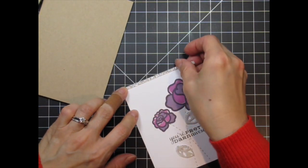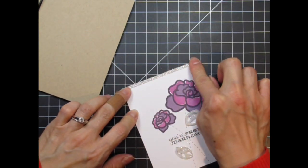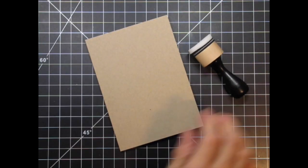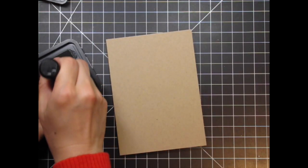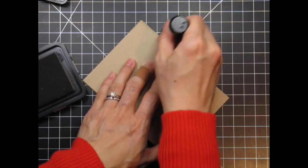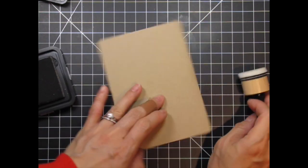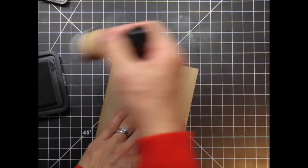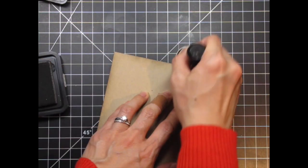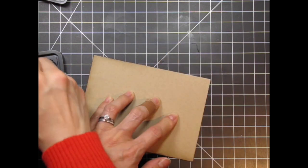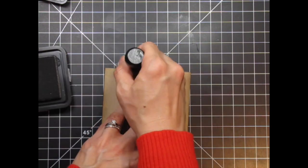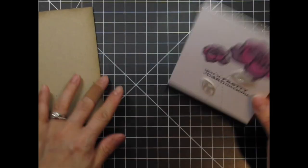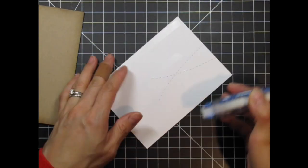After that is adhered with score tape, I hold the panel against the card base to see how it looks. I want the base to look warmer, so I use frayed burlap distress ink and a mini blending tool to sponge around the edges. Now it is perfect and I can go ahead and adhere the panel to the card base.